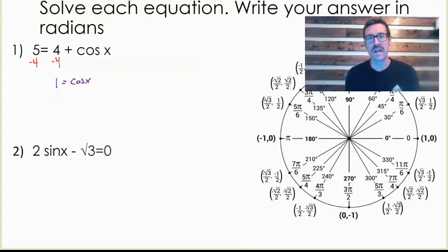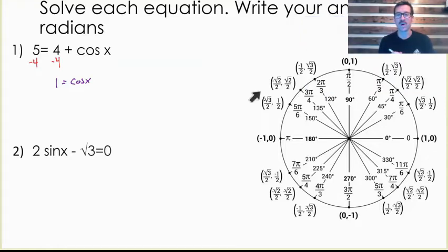And if you have a basic understanding of the unit circle and how that works, we know that cosine is the x value on the unit circle. And if I look on my unit circle and I'm looking for where x is 1, we can see there's really only one location where that takes place. x is 1 when our angle of rotation is 0 radian. So in this particular case, x equals 0 radians.